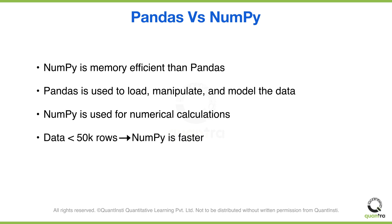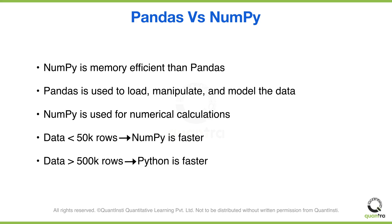There is a thumb rule: when your data has fewer than 50,000 rows, NumPy is generally faster. When you have data with more than half a million rows, pandas is faster. So you can pick either — convert your data into arrays and use NumPy, or convert your data into DataFrames or Series and use pandas. This thumb rule can save your time and make your code more efficient.